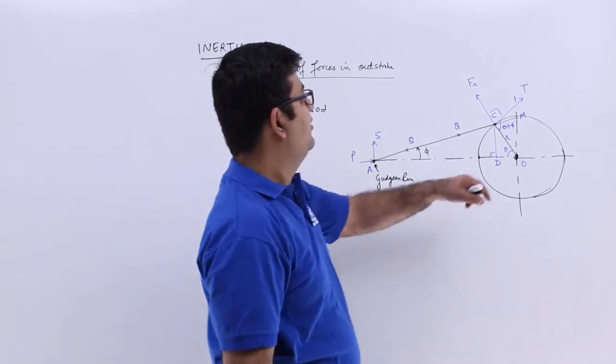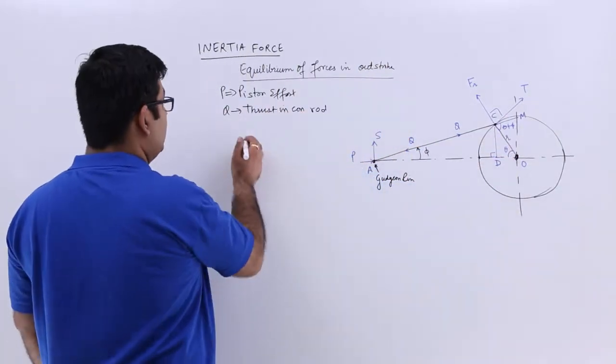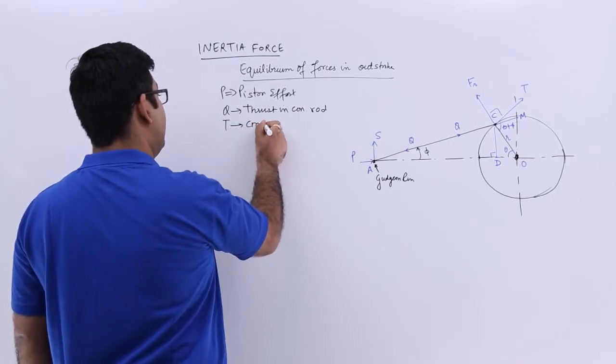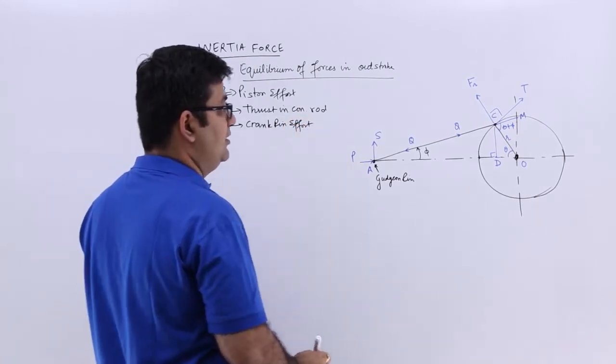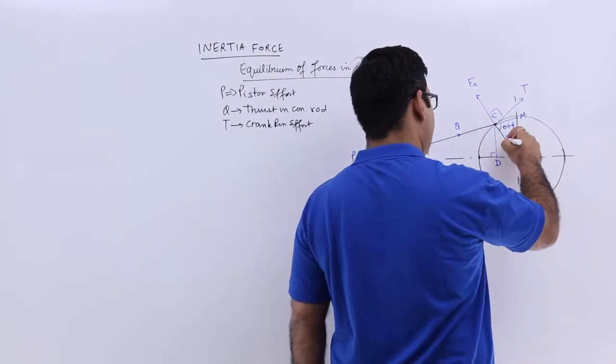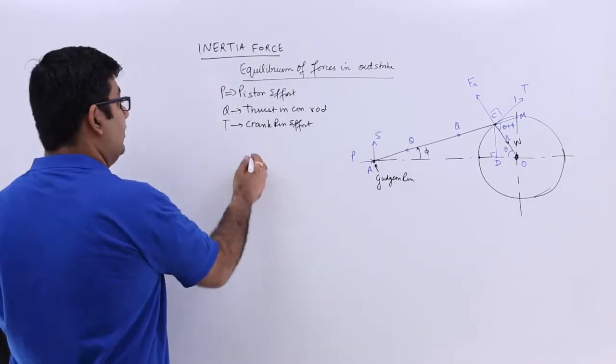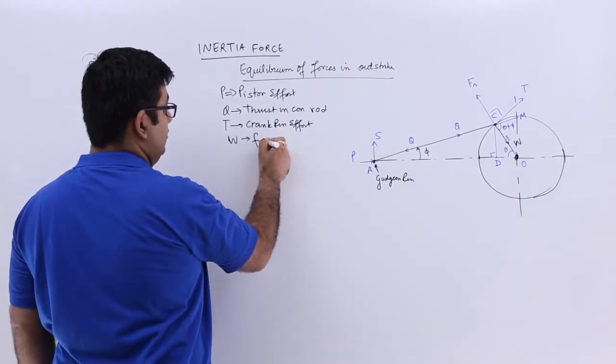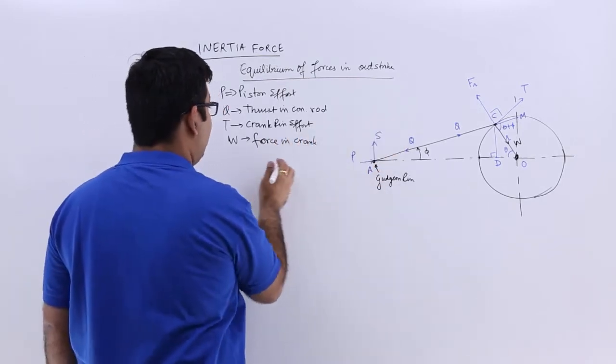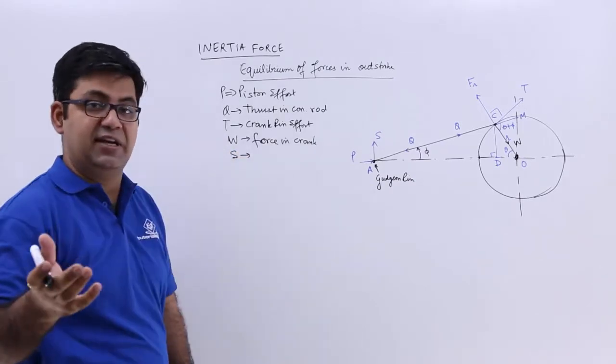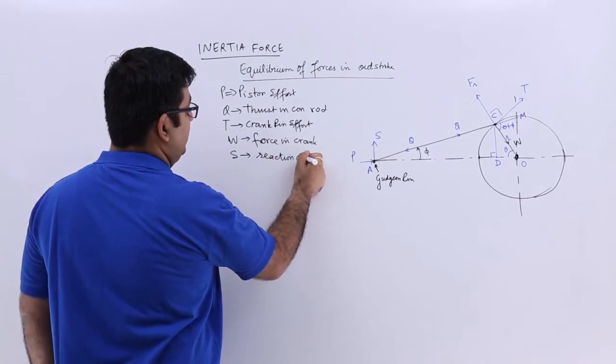Then you have this force T which is perpendicular to the crank radius, so that is the crank pin effort. And then we have this weight W which is the force in the crank. So you have W which is the force in crank, and we have this force S which is the reaction at the piston guides.